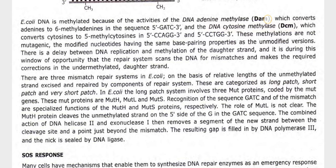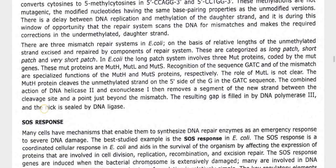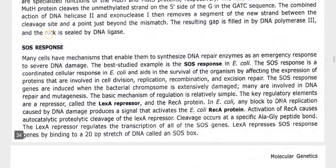In E. coli, the long patch system involves three MutS proteins coded by mutant genes: MutH, MutL, and MutS. Recognition of the GATC sequence and the mismatch are characteristic functions of MutH and MutS proteins respectively. MutH nicks the unmethylated strand on the 5' side of the G in the GATC sequence. The combined action of DNA helicase II and exonuclease I then removes a segment of the new strand between the cleavage site and just beyond the mismatch. The resulting gap is filled by DNA polymerase III and sealed by DNA ligase.